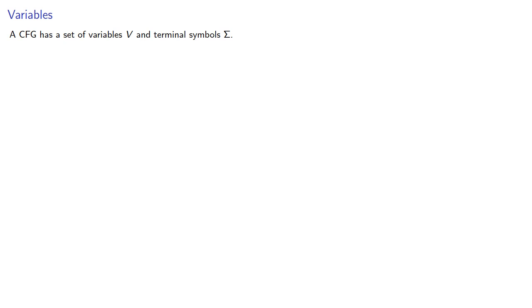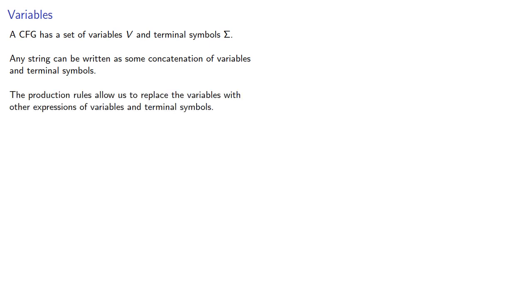A context-free grammar has a set of variables V and terminal symbols sigma. Any string can be written as a concatenation of variables and terminal symbols. The production rules allow us to replace the variables with other expressions of variables and terminal symbols.